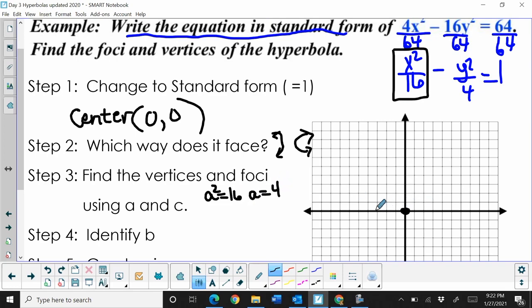I'm going to count left 4 and right 4. Those are going to be my two vertices - vertices 1 and vertices 2, facing left and right.